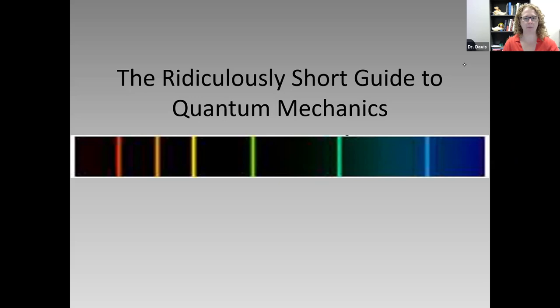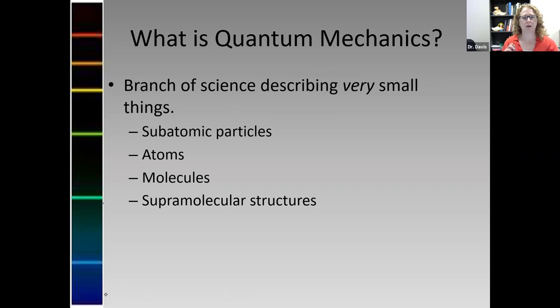First off, what is quantum mechanics? Well, it's a branch of science that describes really, really small things. So subatomic particles - I can use quantum mechanics to describe protons and neutrons and electrons and do very well with that. In fact, a lot of quantum mechanics is about what electrons do and how to describe them. I can use quantum mechanics to describe atoms. So if it's on the periodic table, all the way up to 118 oganesson, I can use quantum mechanics to describe its behavior.